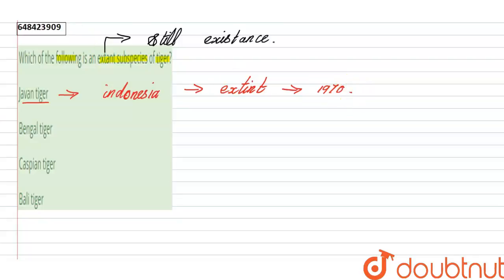So the next one is Bengal tiger. Bengal tiger are still in existence. So this Bengal tiger lives near Bangladesh, Bengal and Bhutan regions, and they are still living.